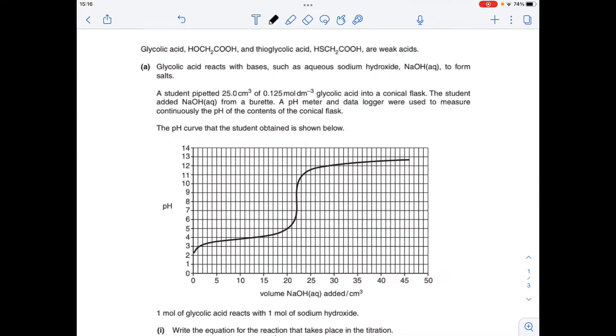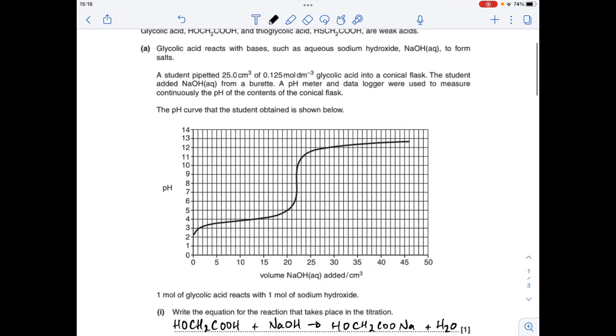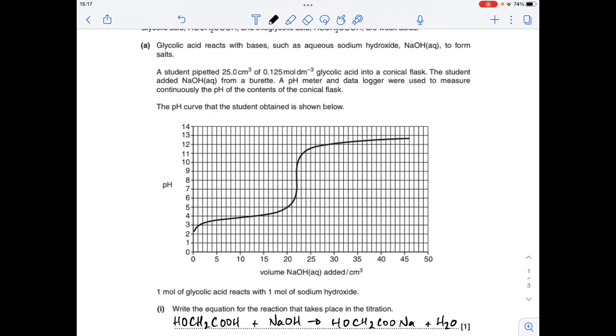The first thing we've got to do is write the equation for the reaction that takes place in the titration, but we are told that one mole of glycolic acid reacts with one mole of sodium hydroxide. So it's a straightforward one-to-one reaction and there it is there. So it's this H+ ion that's going to react with the OH- ion from the sodium hydroxide and get your water and the salt will look like that.